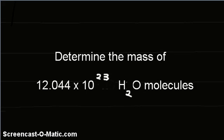Determine the mass of 12.044 × 10²³ H₂O molecules. Here we'll use Avogadro's constant, which says 6.022 × 10²³ molecules